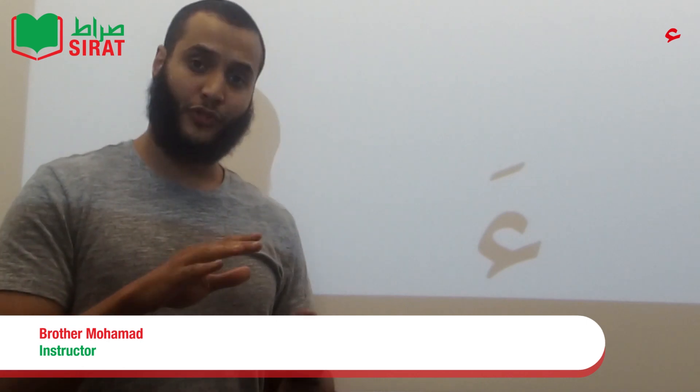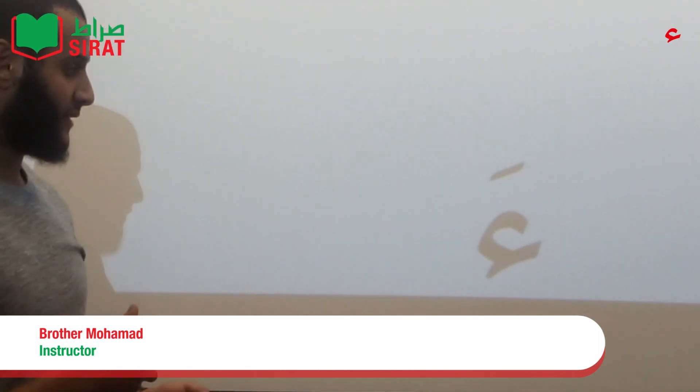The second vowel sign, which you have to know in order to follow this series and also to understand Arabic language, is the Kessarah. Now the Kessarah looks like this. So it goes underneath the letter, in this case the Hamzah, so it sounds like this.